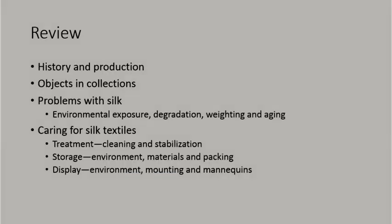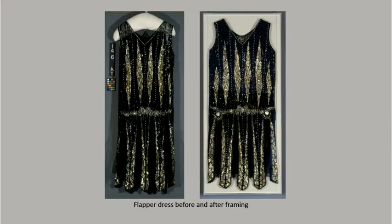Some smaller garments can be mounted flat and framed. In these cases, the garment is never truly flat, as that would create sharp creases that could break over time. Instead, a thin pillow insert is created out of archival material to fit the shape of the garment and placed between the layers. This pillow also creates a supportive layer for the stitches used to attach the dress to the mount. This is a good way to mount things like this flapper dress, which is heavily beaded and could never be displayed on a mannequin safely.